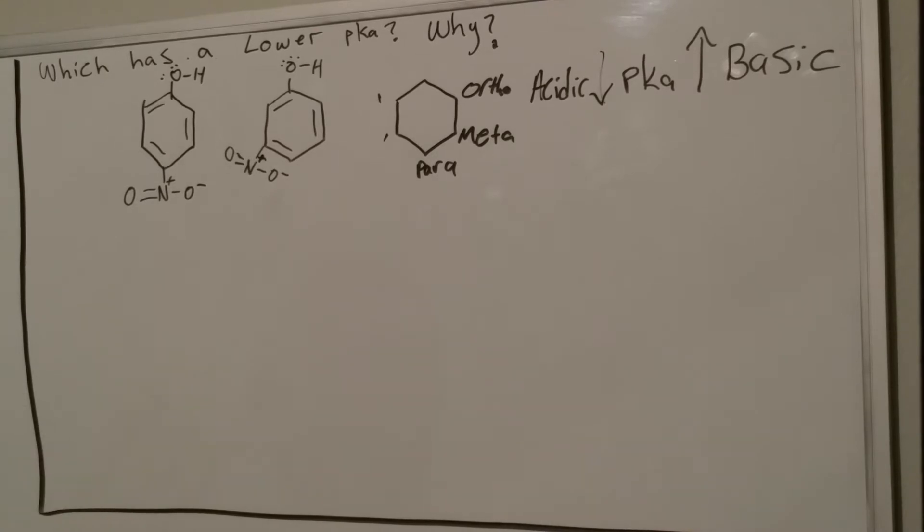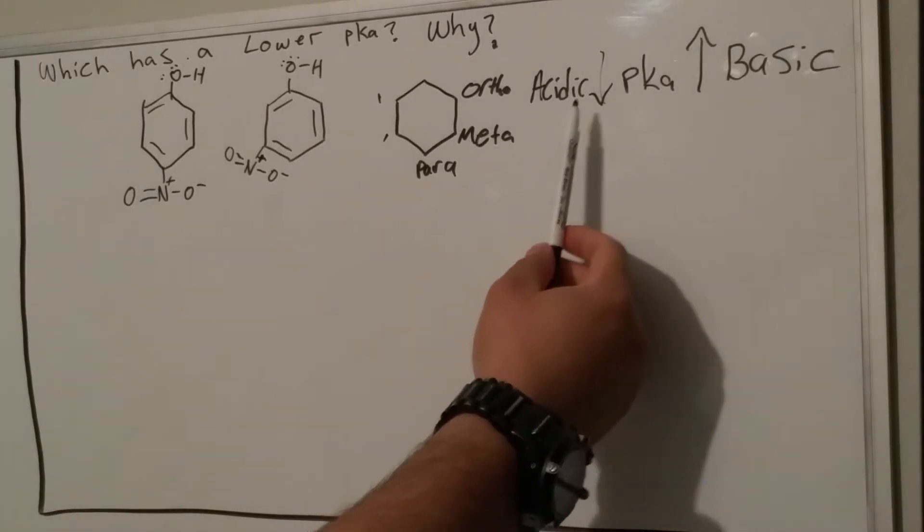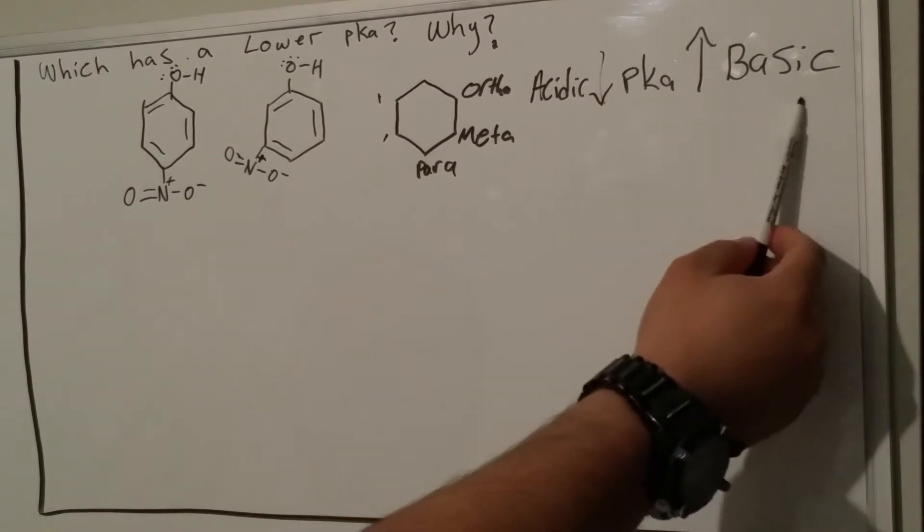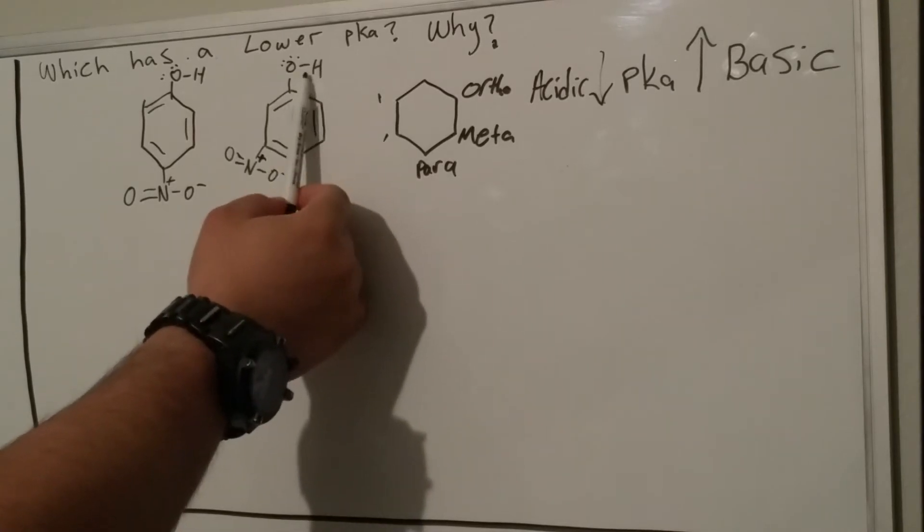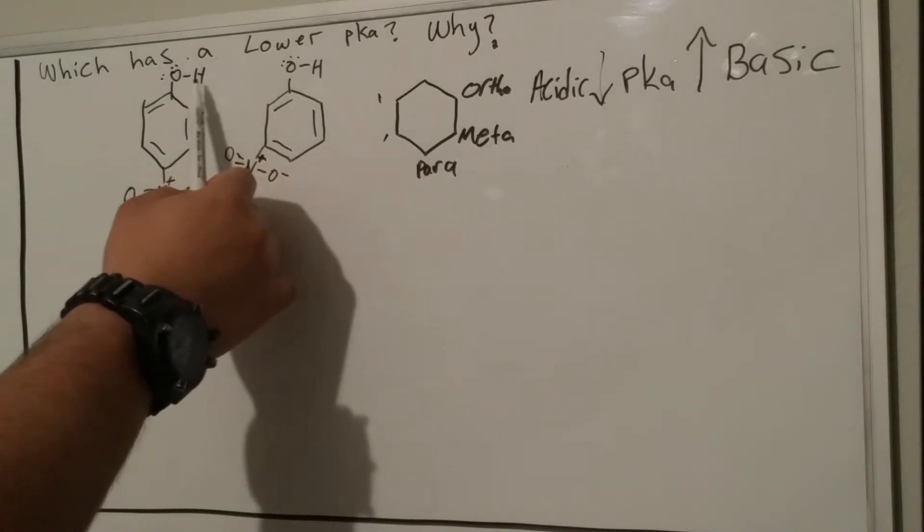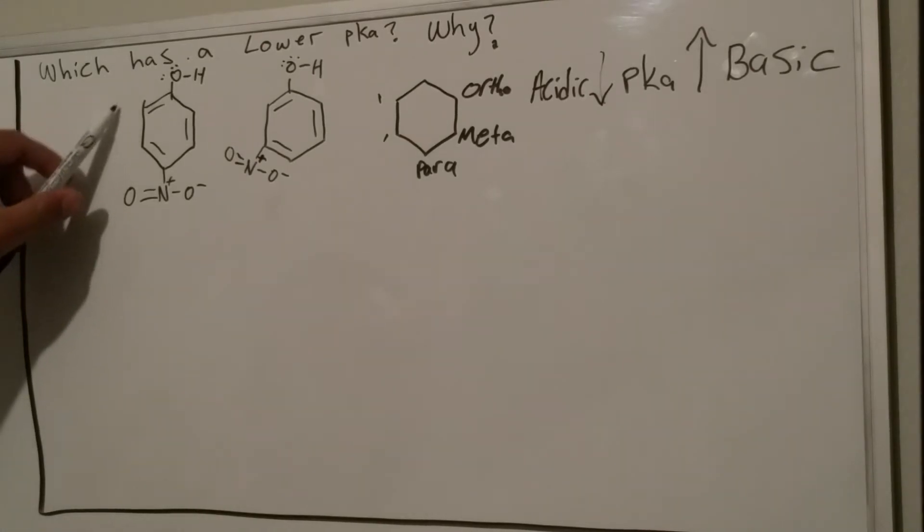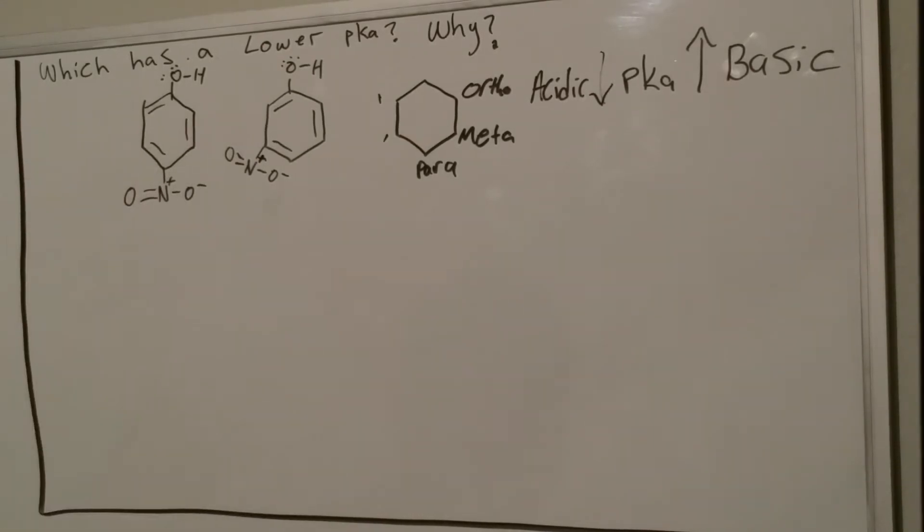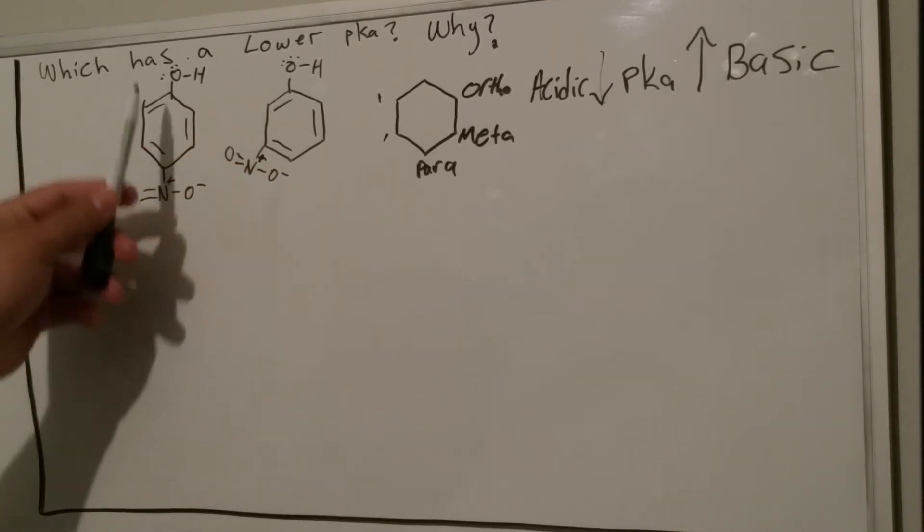A molecule with a lower pKa is acidic and a molecule with a higher pKa is basic. What is more acidic? A molecule that is more readily available to release their hydrogen atom, and what makes that possible is a more stable resonance structure.